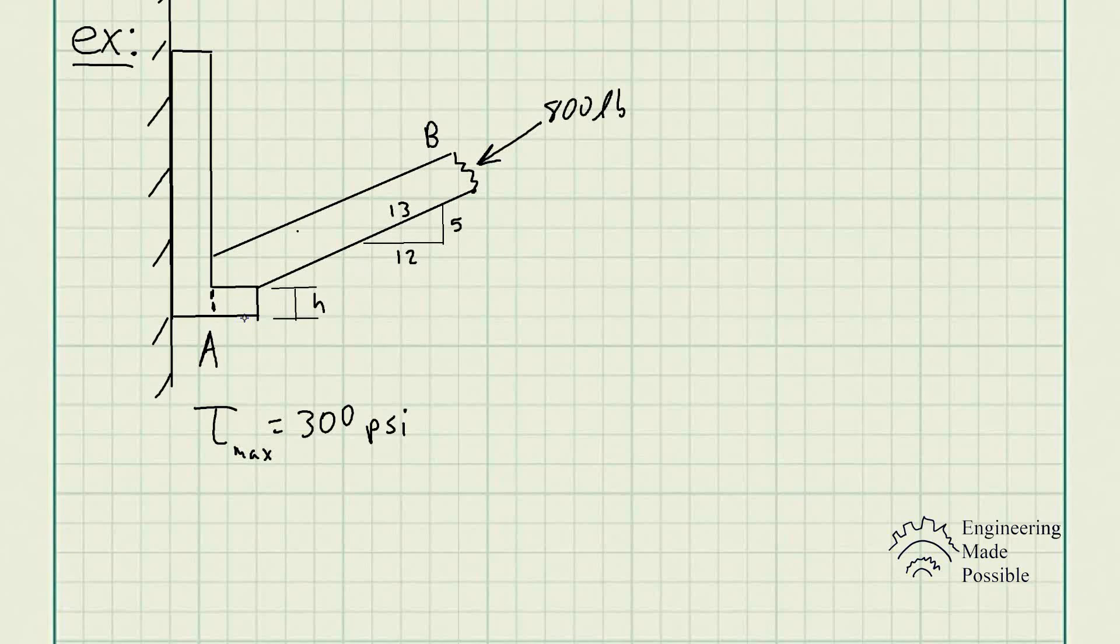Now the first step is to solve how much shear force it's going to be seeing. In this case, we can see that's going to be the y component of this 800 pounds, so we just get the y component using sine. Since we do have the rise, the run, and the slope, we can use the trig identities to get the y component. So the y component of the force, which is also that shear force, is equal to 800 pounds times 5 divided by 13, or opposite over hypotenuse.